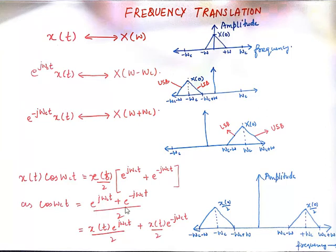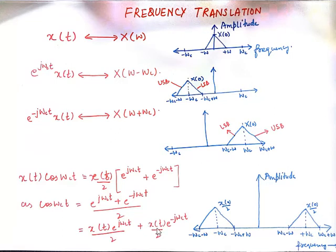As I know, cos(Ωc·T) can be represented by [e^(j·Ωc·T) + e^(−j·Ωc·T)] / 2. If I separate the terms, this will be X(T)/2 times e^(j·Ωc·T) plus X(T)/2 times e^(−j·Ωc·T). The thing is X(T) will be replicated, but the amplitude — for example X(0) — will now be halved.